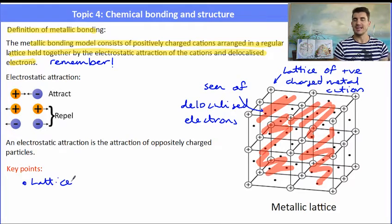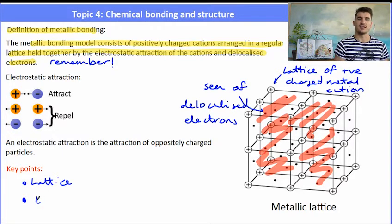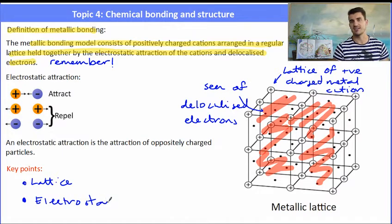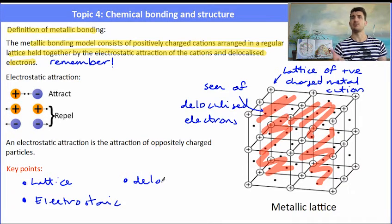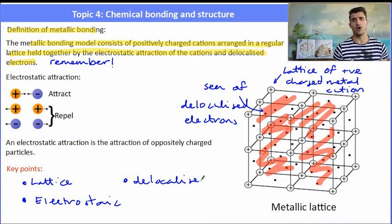So what are some of the key points for the metallic bonding model? It's a lattice of positively charged cations. The electrostatic attraction between the cations and the electrons holds the lattice together, and remember that those delocalized electrons they belong to the lattice as a whole, not particular atoms. They're free to move randomly throughout the lattice.